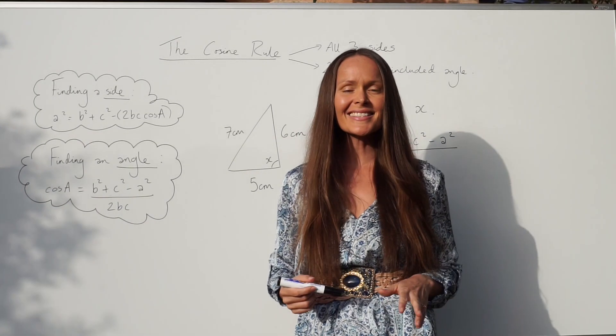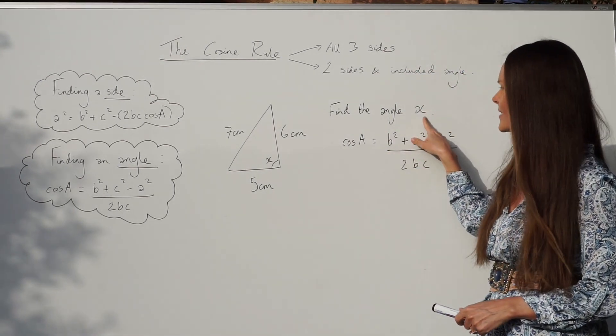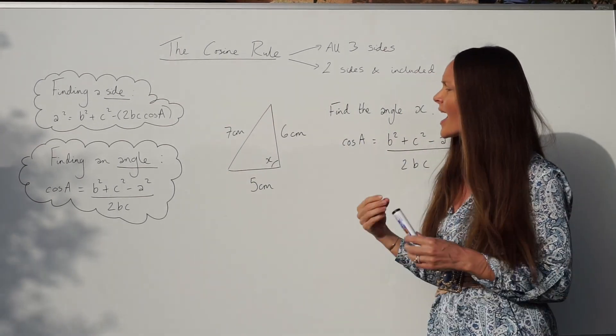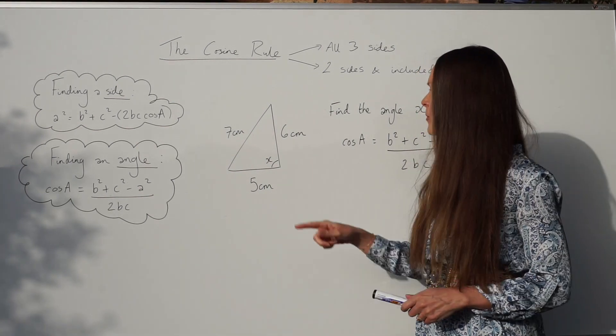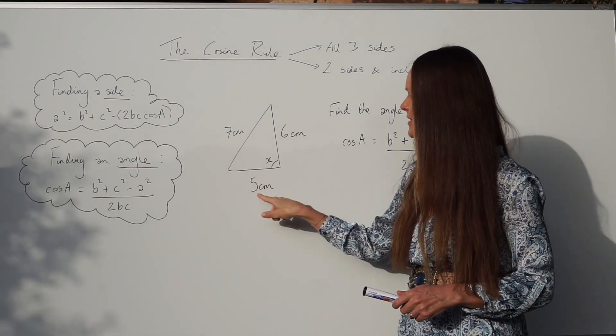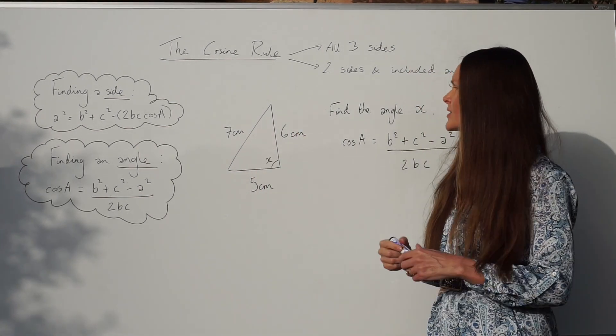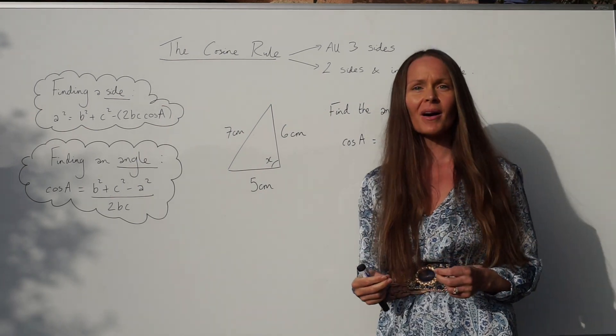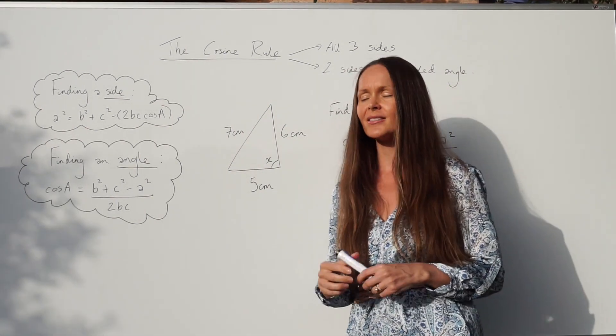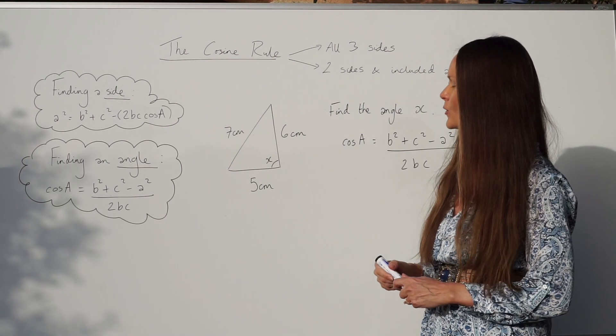Okay, in this next example we have to work out the angle X, okay, in this triangle. And we know we can use the cosine rule because we know all three sides of this triangle. So just like before, start by labelling your triangle.